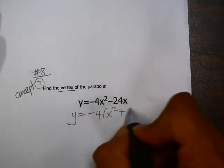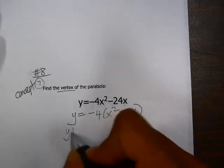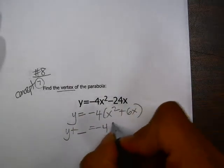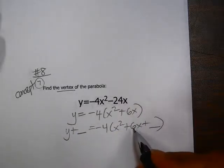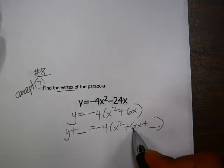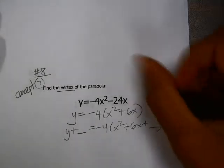Doing the formula b divided by 2 squared. That would be 6 divided by 2 is 3. 3 squared is 9.